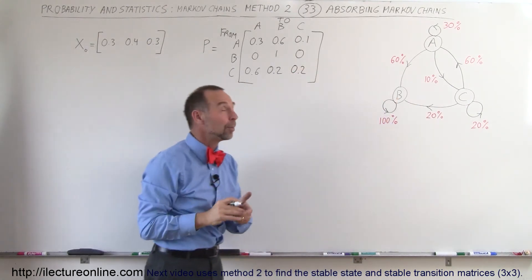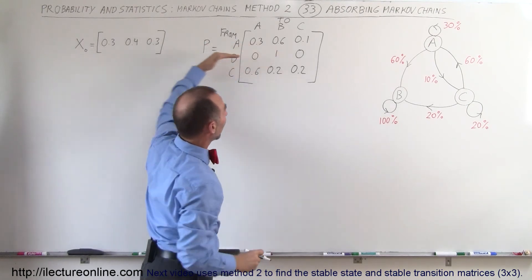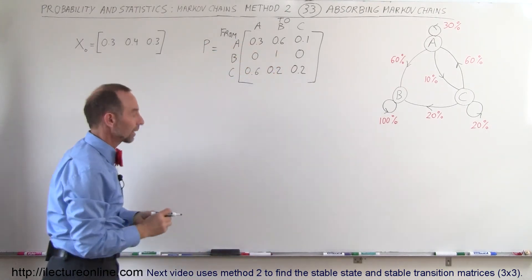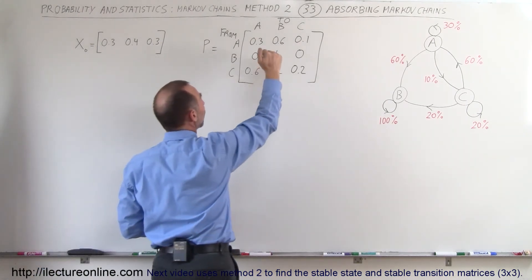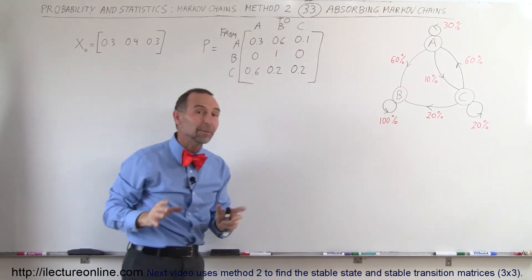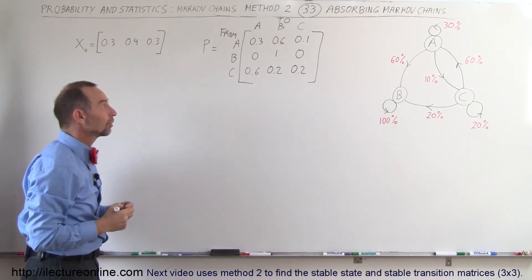Again, a quick check shows that if we add up all the elements from left to right, they all add up to 1 and so therefore that is a correct matrix. Now notice, one of the rows has a 1 and everything else is a 0. That is a pretty good indicator that this is probably an absorbing Markov chain.